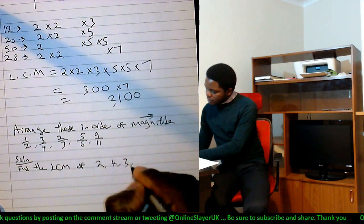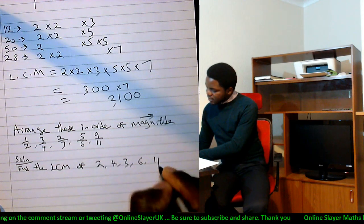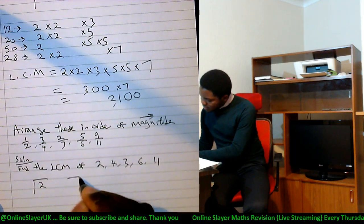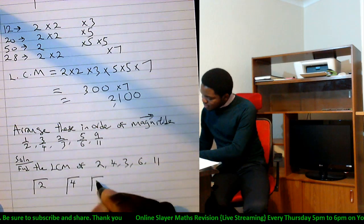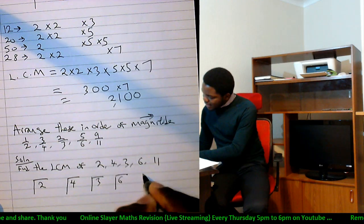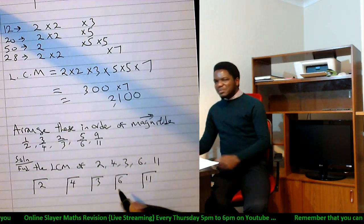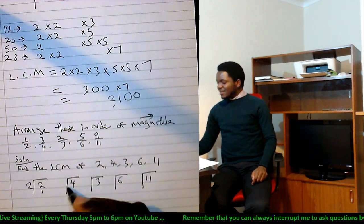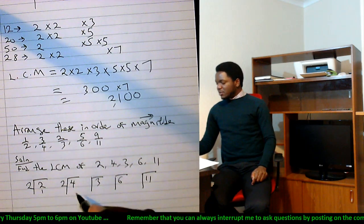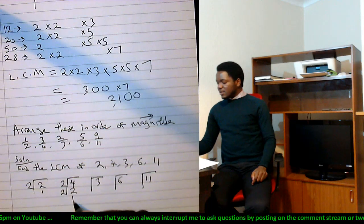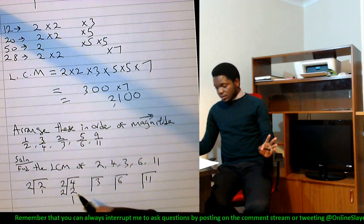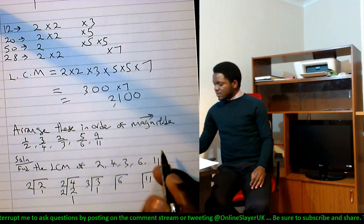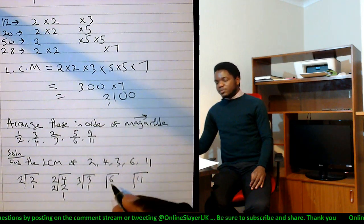So find the LCM of two, four, three, six, and eleven. Same way we did all the other ones is the same way we can do these guys. But I'm looking at it, it's not going to be difficult because this is already a prime number. This is going to be divisible by two, you get two, and another two gives you a one. Three times two, everyone knows three is a prime number already.